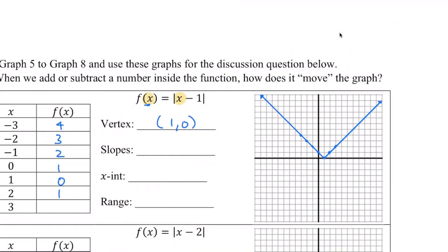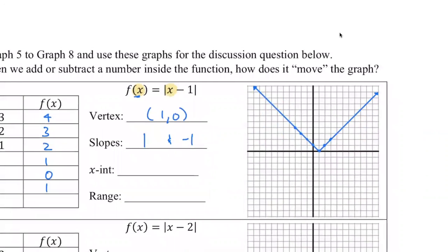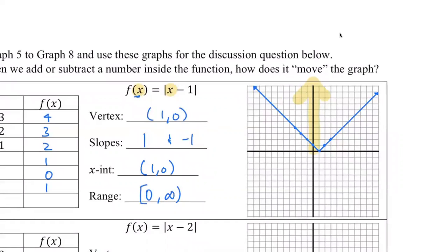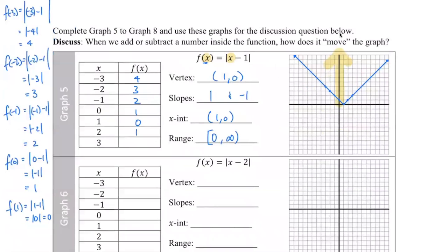Now we answer a few questions. The vertex is at one comma zero — that's the pointy turning point. The slopes are one and negative one, easily observable on the graph. The x-intercept is the same point as the vertex: one comma zero. The range covers from zero to infinity — we include zero because y can equal zero, just not anything less than zero.